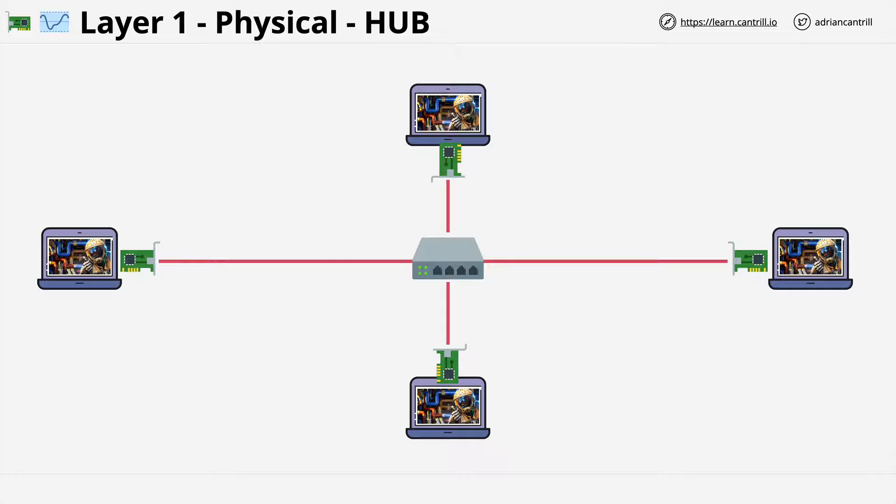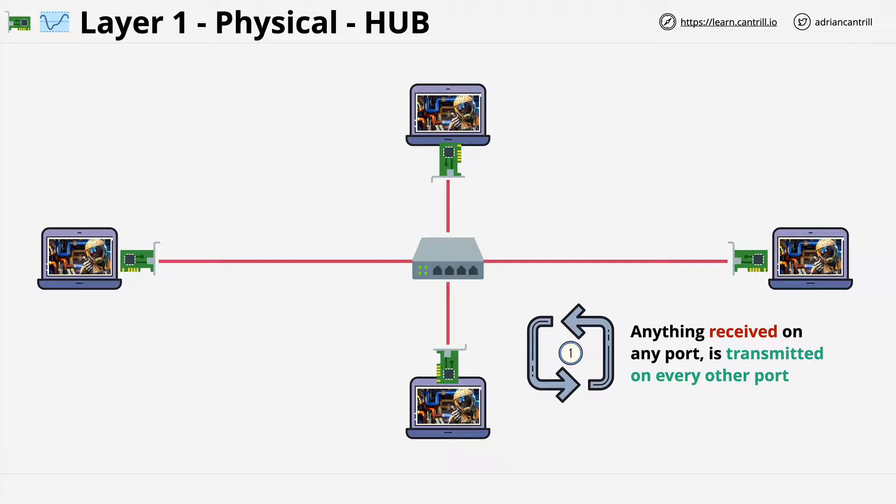Now, hubs have one job. Anything which the hub receives on any of its ports is retransmitted to all of the other ports, including any errors or collisions. Conceptually, a hub creates a four-connector network cable, one single piece of physical medium which four devices can be connected to.